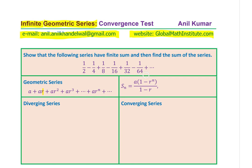Now let us see how we solve such a question. Clearly what we see here is alternating positive and negative terms, and we also notice that to get the next term we are multiplying by a factor of one-half. So we have a series where a equals one-half. Since there is a negative sign alternating, we can say r involves negative one to the power of n, with the exponent n minus 1 making the second term negative, and we are multiplying by a factor of one-half. This is clearly a geometric series.